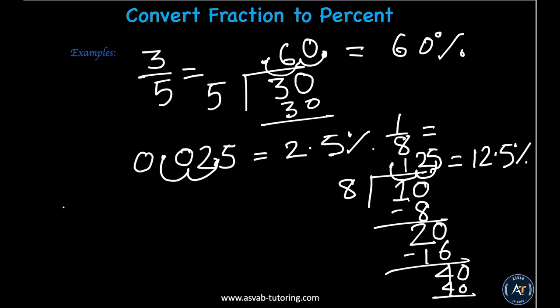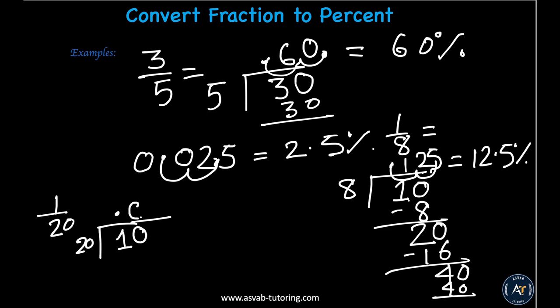For 1 over 20: put 20 outside and 1 inside. Add a decimal and bring down a zero — you still can't divide 10 by 20, so put a 0 on top and bring down another zero. 20 goes into 100 five times, so the decimal is 0.05. Move two decimal places to get 5 percent.